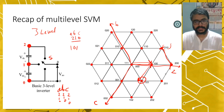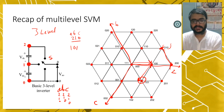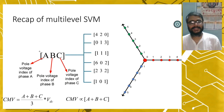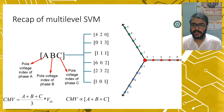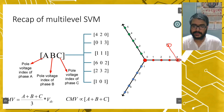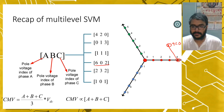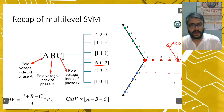A, B, C represent the pole voltage index for phase A, B, and C respectively. For example, to plot 4,2,0: come to 4 on the A axis, go parallel to B axis at 2, then stay for C at 0, arriving at 4,2,0. To plot 6,0,2: go to 6 on the A axis, stay for B at 0, then go parallel to C axis at 2, arriving at 6,0,2. This is how you plot the various vectors in the space vector diagram.